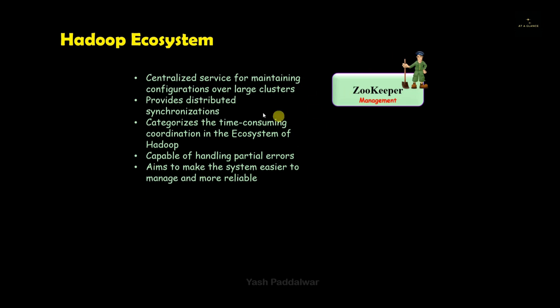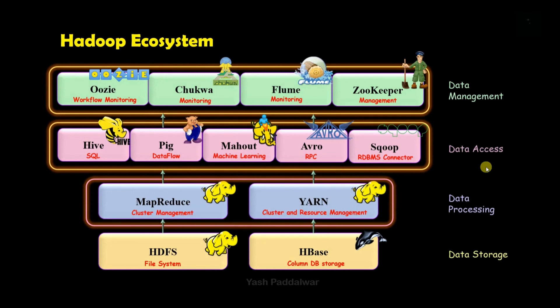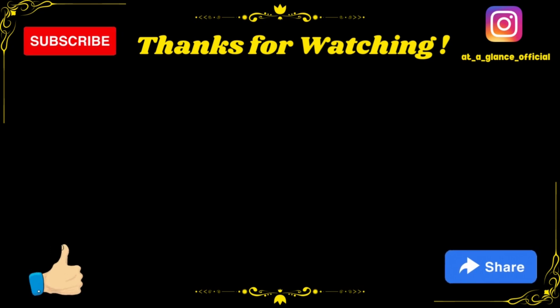That brings us to the end of the explanation for all components present inside the Hadoop ecosystem. Whenever you explain these four sections — data storage, data processing, data access, and data management — watch the video once or twice to make your concepts clear. All these components work in coordination to make tasks easier, thus creating the Hadoop ecosystem. If you have any doubts, post them in the comments. Do like, share, and subscribe, and hit the bell icon.